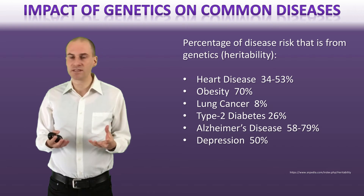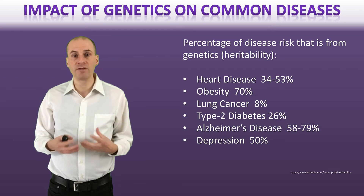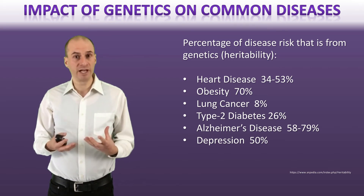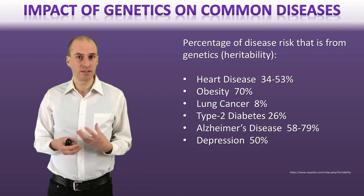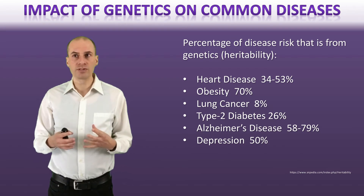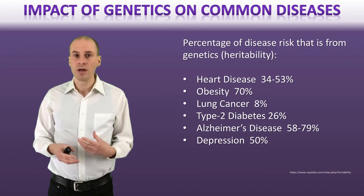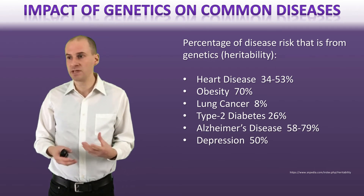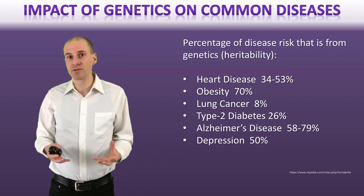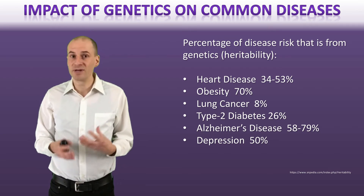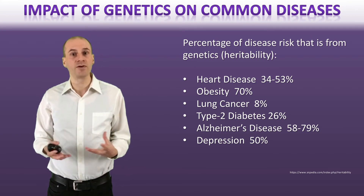For heart disease, estimates suggest that about 30% to 50% of your risk is due to genetic risks you've inherited. For obesity and body weight, it's about 70% genetic component. There are stereotypes around body weight being a choice or because people are not motivated to take action, but the vast majority of people's characteristics are due to genetics — it's not a choice. Behaviors are important and they're a component, but the variation we see in society is primarily due to genetic factors.